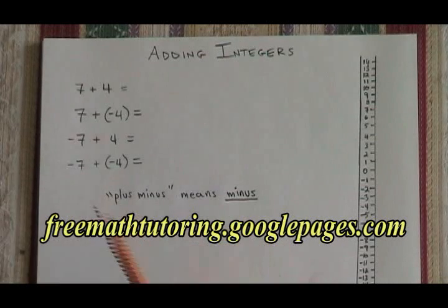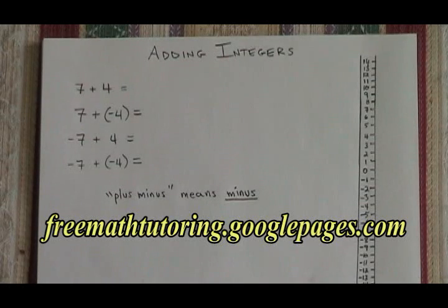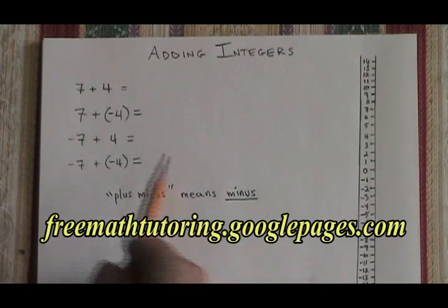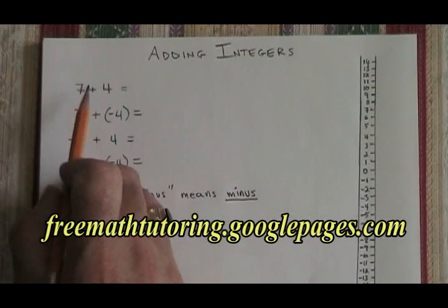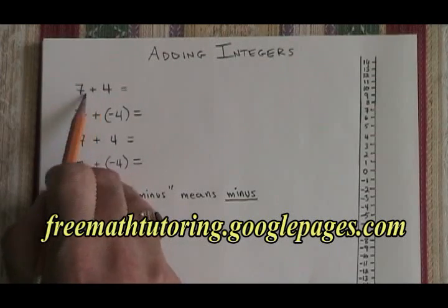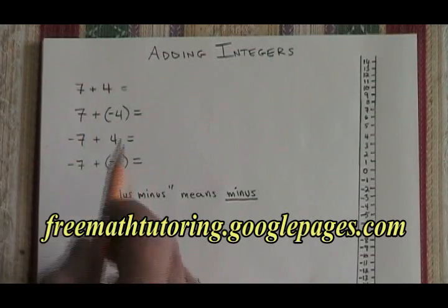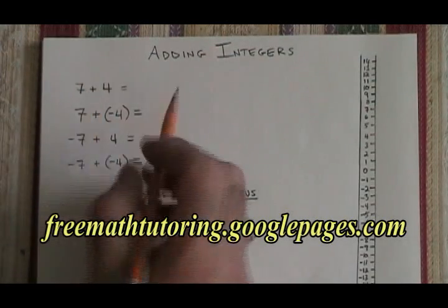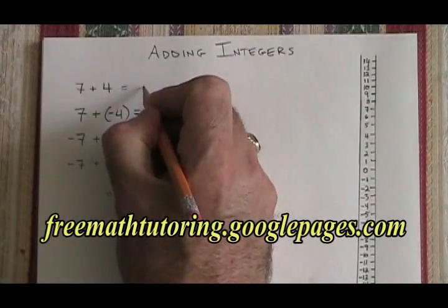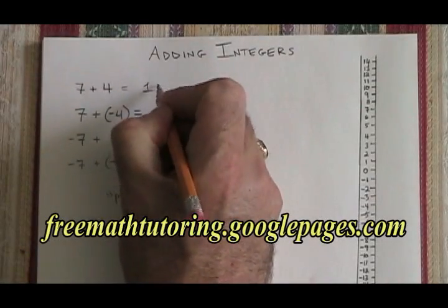In our high school integers course, we have to learn how to add integers. Adding two positive integers is the same as what we already know. We know that 7 plus 4 equals 11.